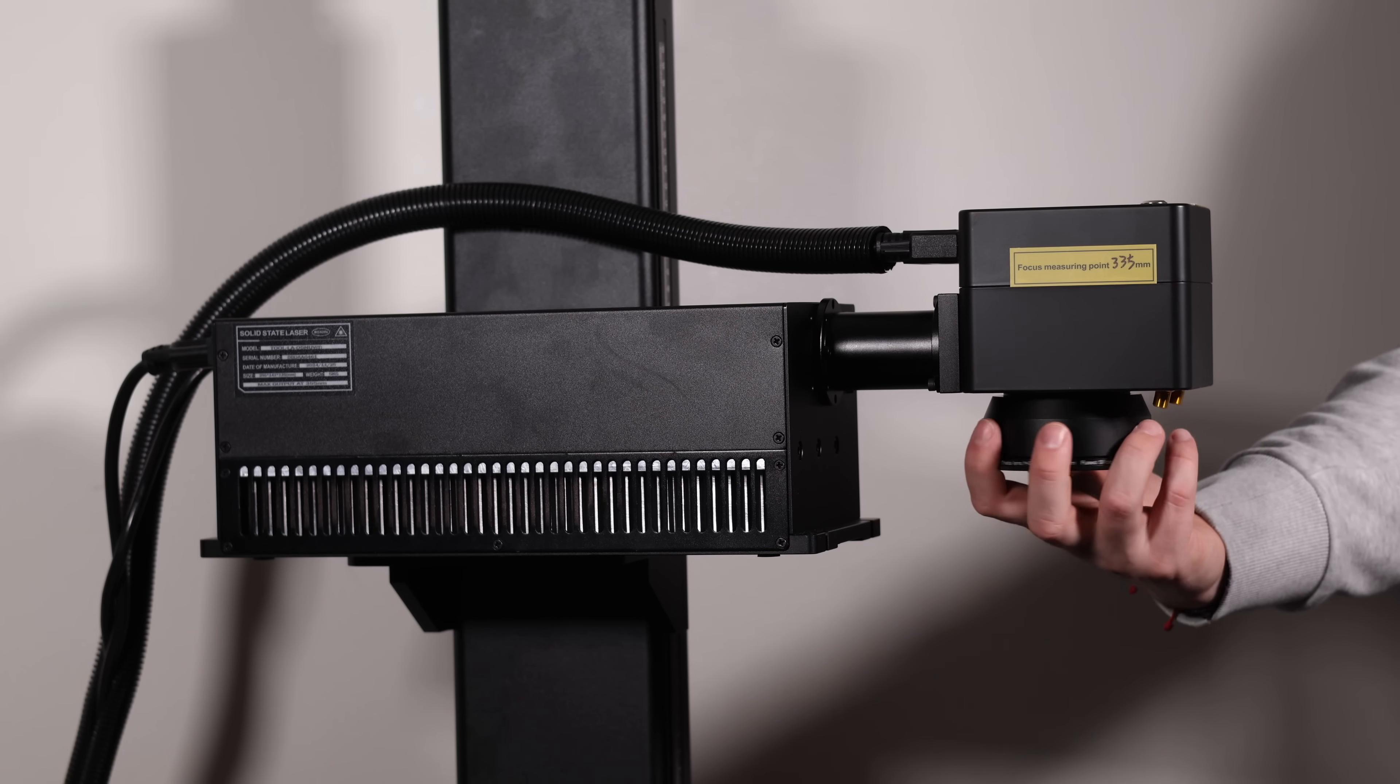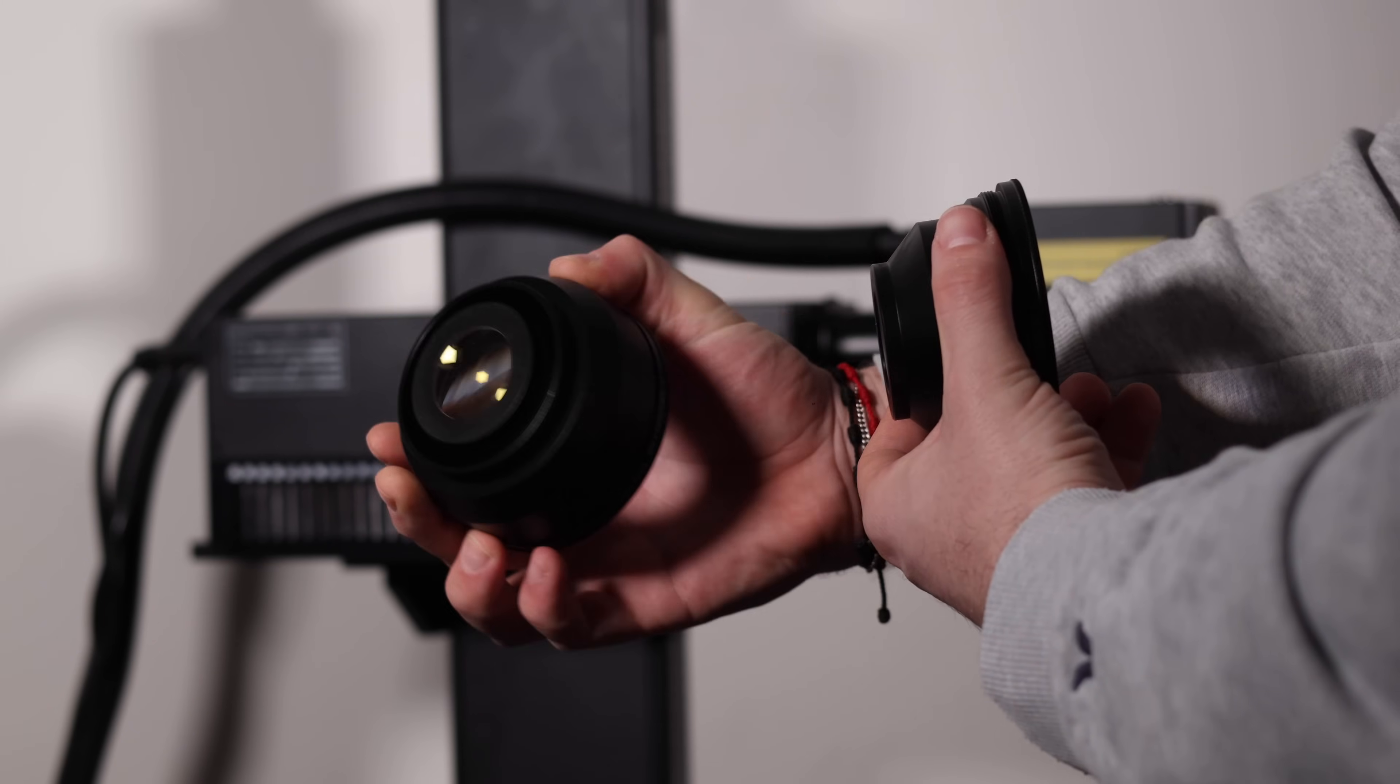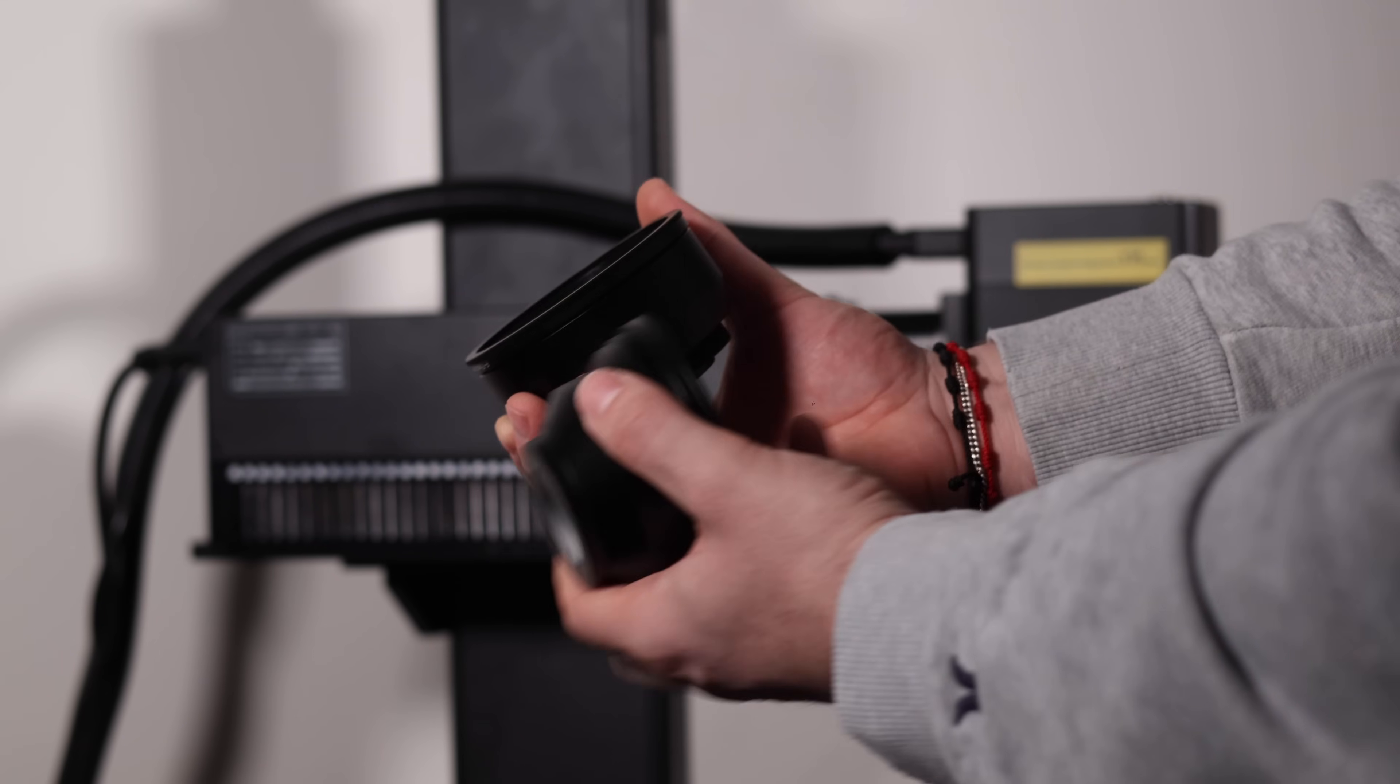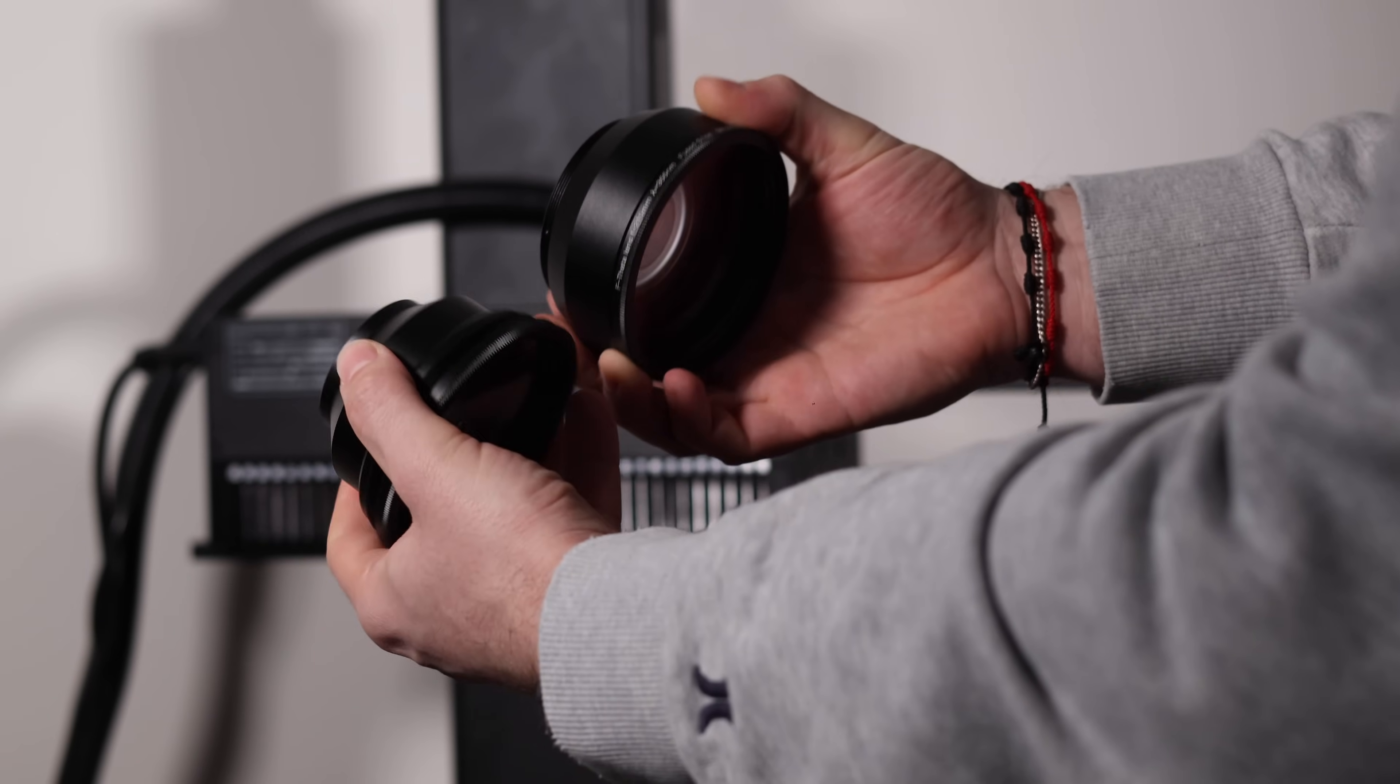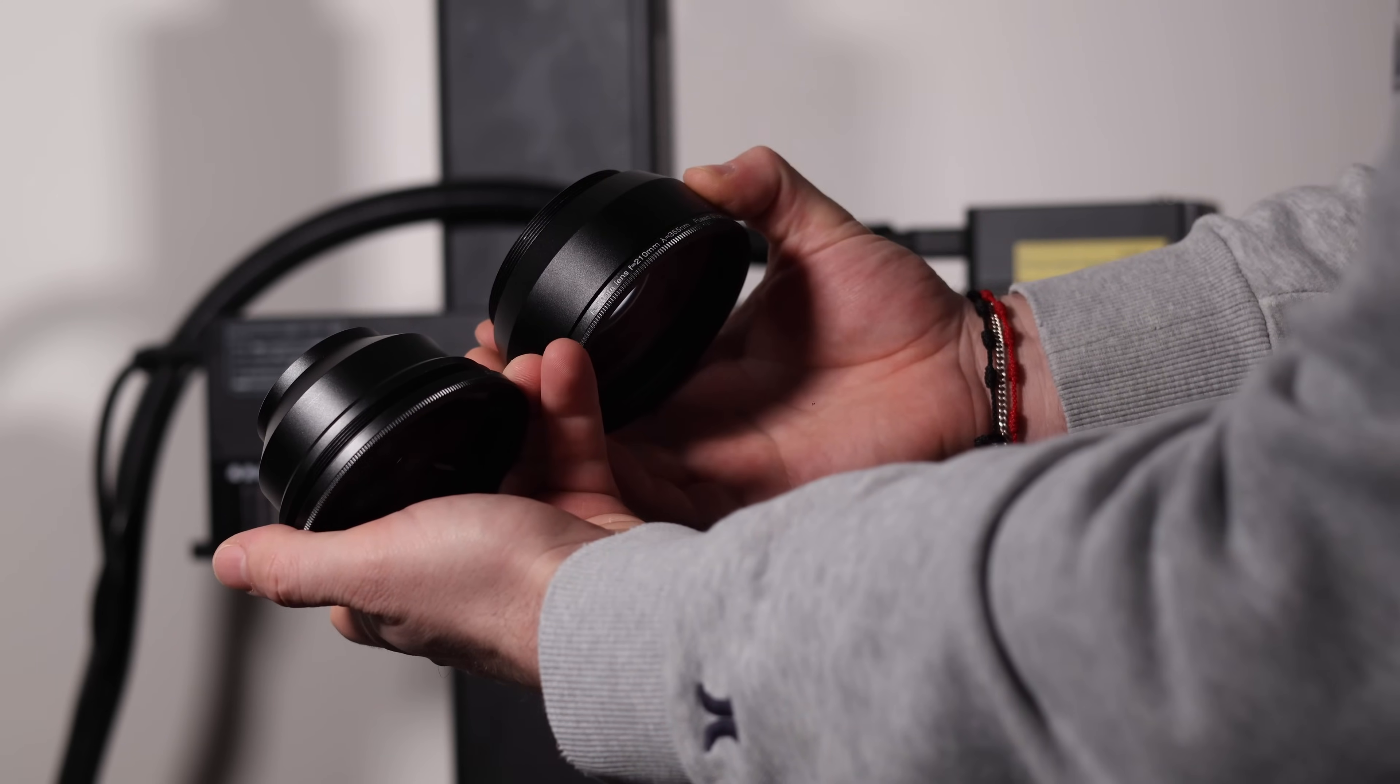The Omni also ships with two lenses, a 70 by 70 millimeter lens and a 150 by 150 millimeter lens. These provide flexibility based on your project needs. The smaller lens focuses more energy into a compact area for intricate work, while the larger lens trades a bit of energy efficiency to cover a broader engraving area, perfect for bigger items.